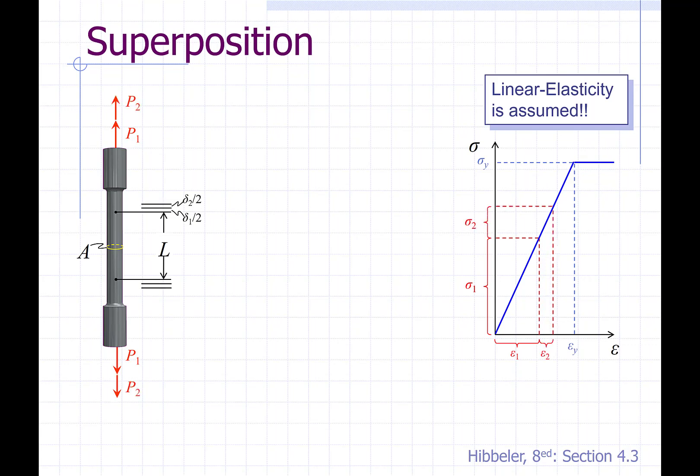Now let's apply a load P2. Again, we can see the results of that load application. It causes a further displacement, delta 2, in the specimen, and a further stress and a further strain of sigma 2 and epsilon 2 to the material.